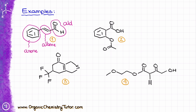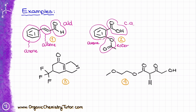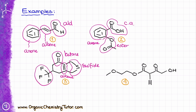For molecule number two, I have a carboxylic acid, then I have an ester, and I also have an arene — an aromatic compound. For molecule number three, I have a sulfide, then I have a ketone, I have an alkene, and I have an alkyl halide.